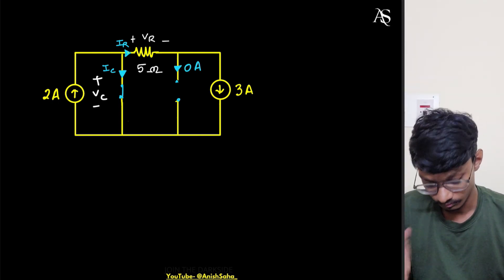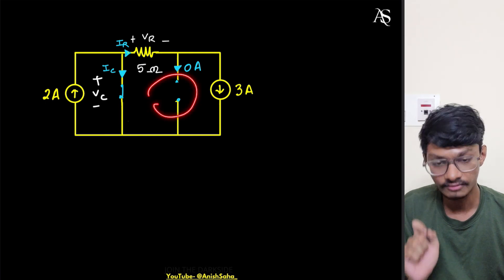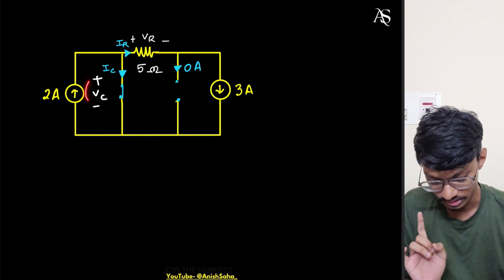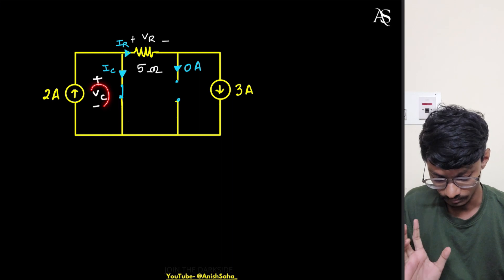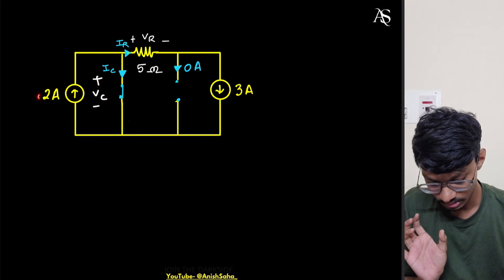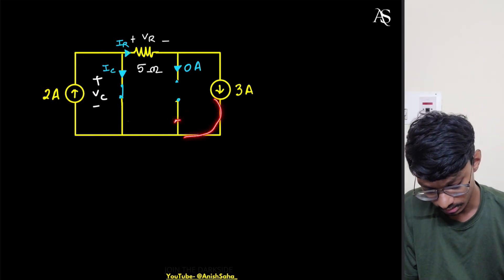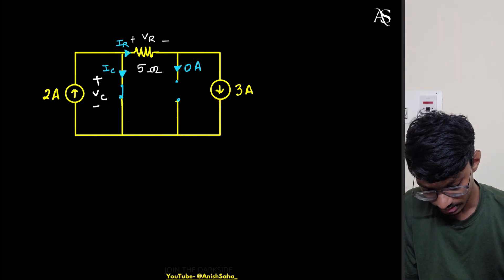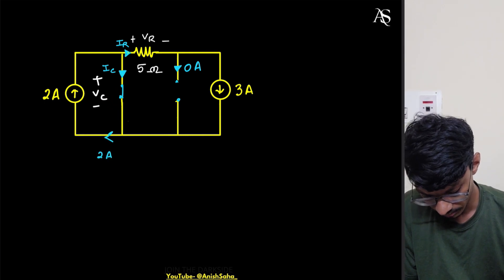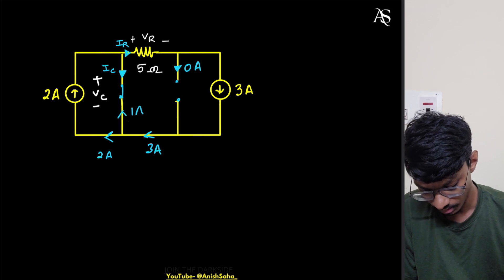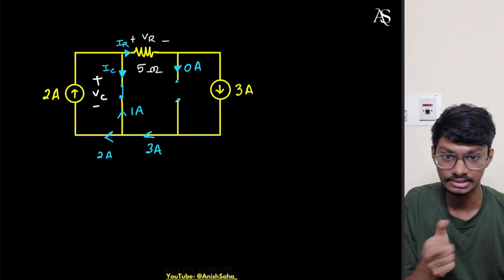Now, if there is any infinite voltage, the inductor current would change instantaneously; if not, it won't. Similarly, if infinite current flows through the capacitor, the voltage changes instantaneously. We observe: there is 2 amps of current here and 3 amps incoming, so 1 amp flows through the capacitor branch — this is finite, so the voltage won't change instantaneously.